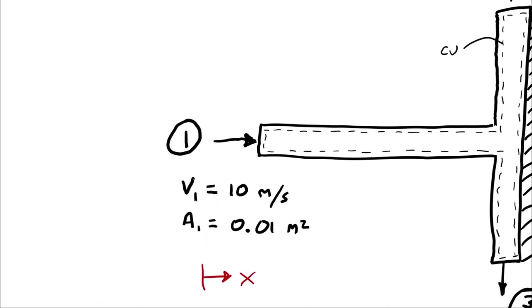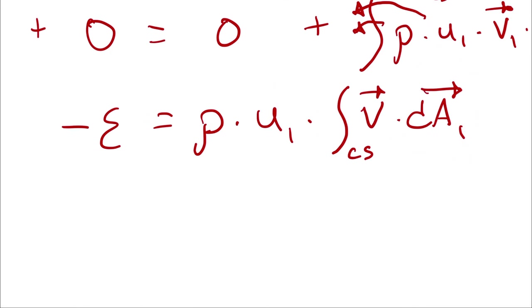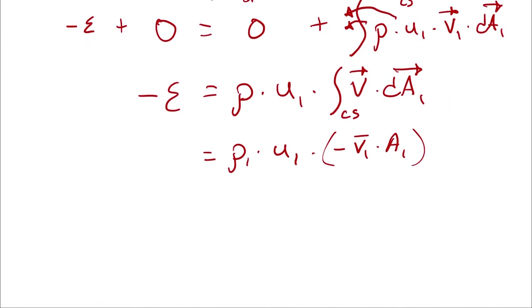If they are in the same direction, I use a positive value. The area vector at state 1 is to the left, the velocity vector at state 1 is to the right, which means they are in opposite directions, which means this is going to be negative average velocity at state 1 times A1. My average velocity at state 1 is going to be entirely in the x direction, therefore I can just plug in u1.